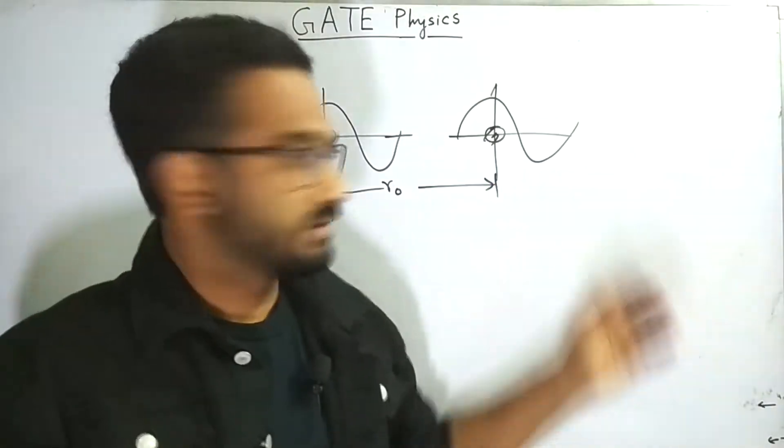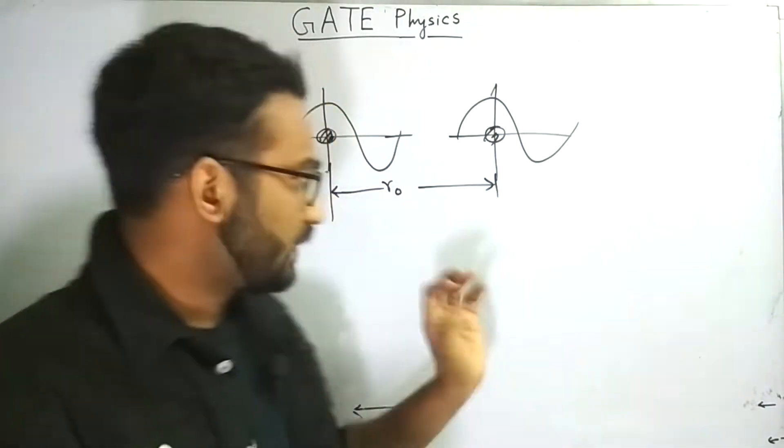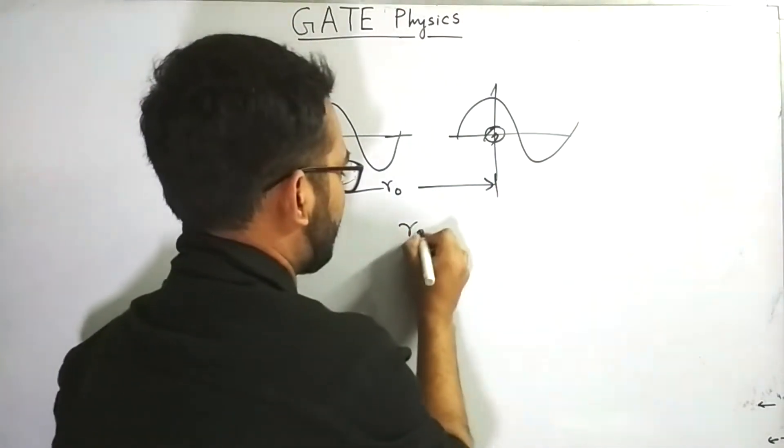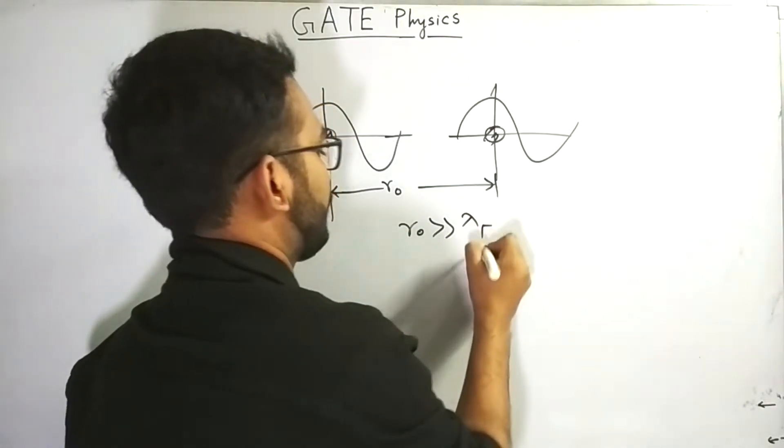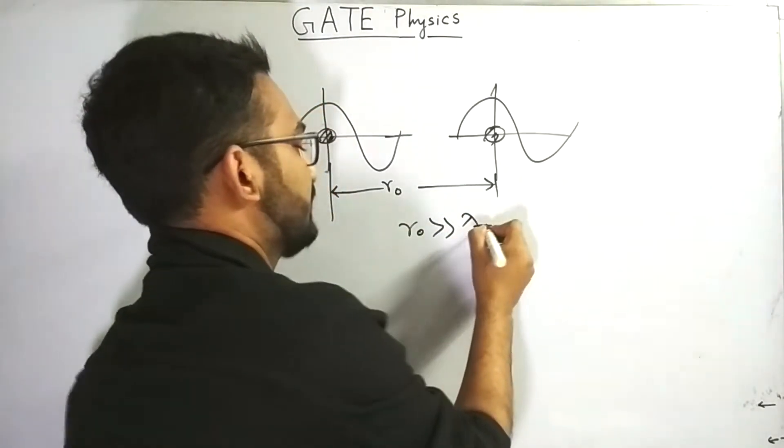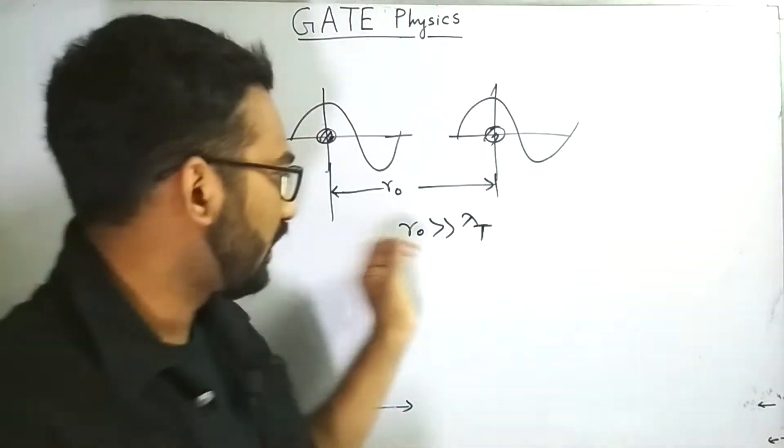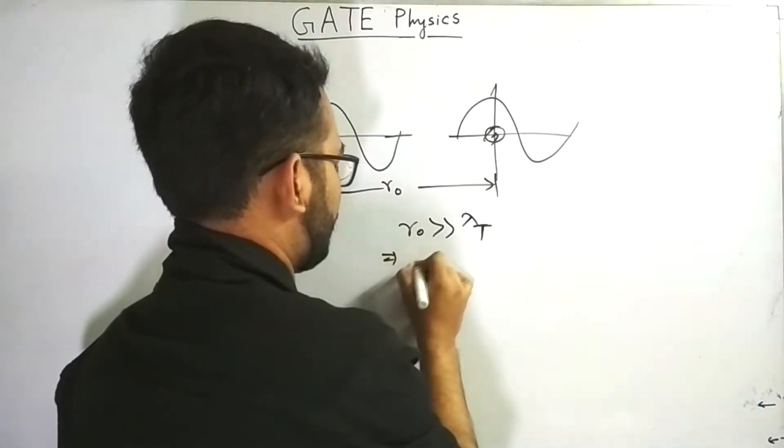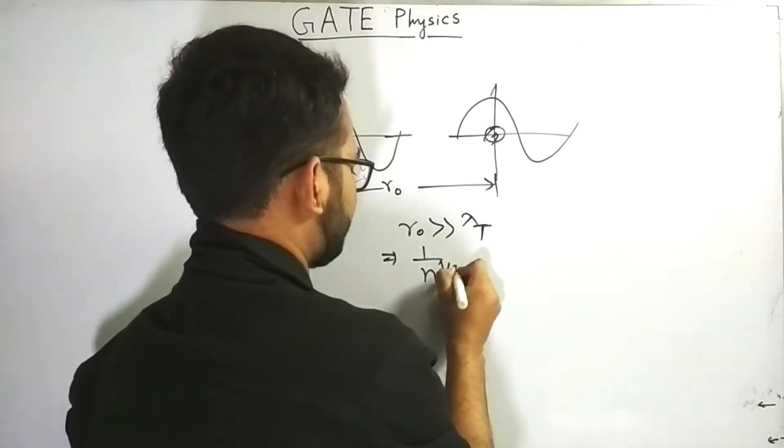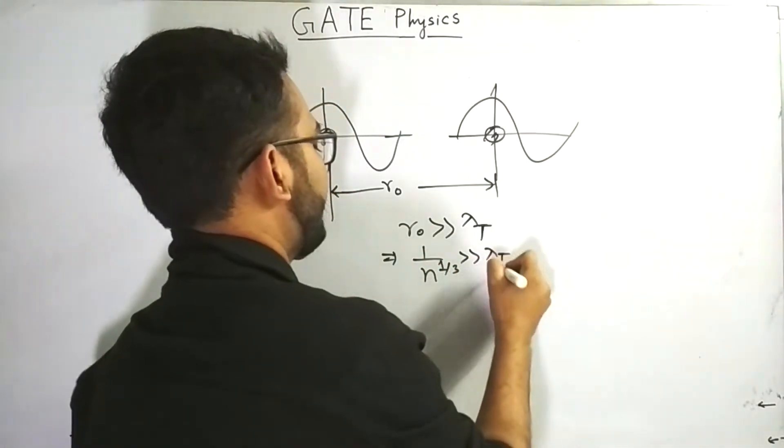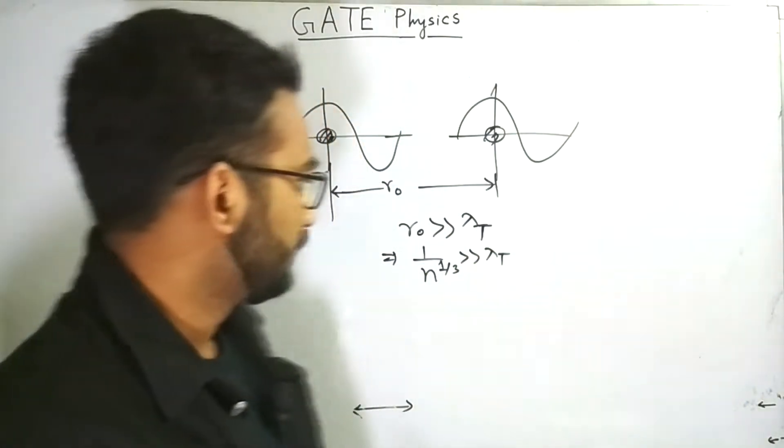So this is the interatomic spacing between these two atoms. Now, we can say that gas is in the classical regime only when this R naught is much greater than lambda t. What is lambda t? Lambda t is the corresponding thermal wavelength of these particles. Now, we know that R naught is proportional to 1 by n to the power 1 by 3, where n is the number density.